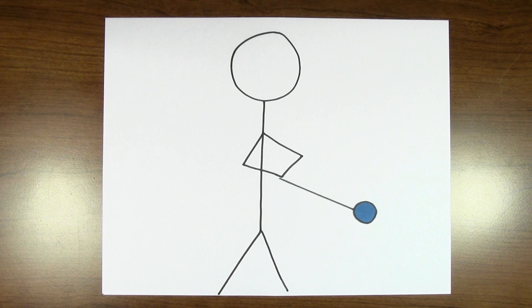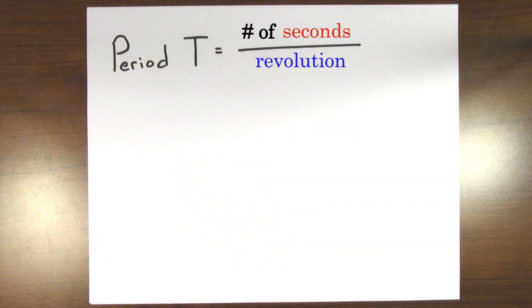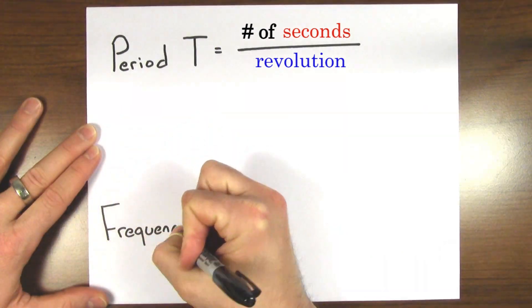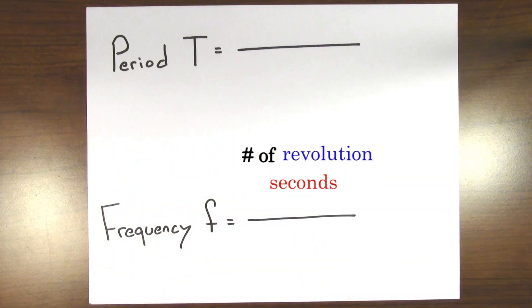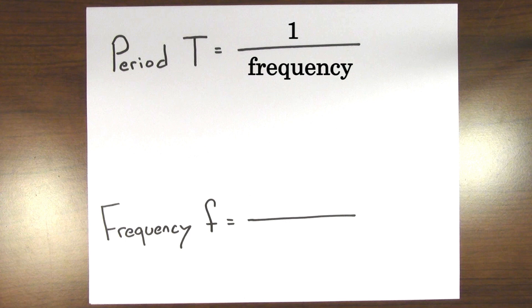Okay, those ideas are neat, but I know what you're thinking: I wish there was more math involved. If you want an equation that relates period to frequency, just remember that period is the number of seconds per revolution and frequency is the number of revolutions per second. So period equals 1 over the frequency, and frequency equals 1 over the period.